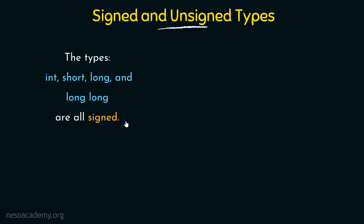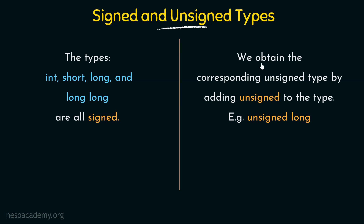What if we want to declare an unsigned data type? We obtain the corresponding unsigned type by adding the unsigned keyword before the type. For example, unsigned long means a long data type that is unsigned. Similarly, unsigned int means an integer data type that is unsigned. When we say unsigned, it will not support negative numbers — it will only be positive numbers.